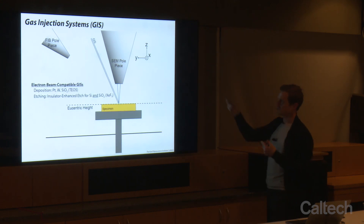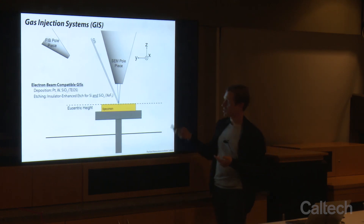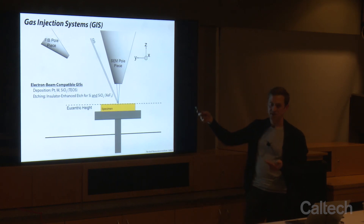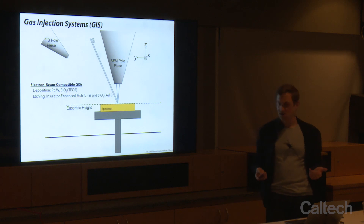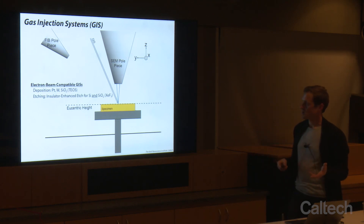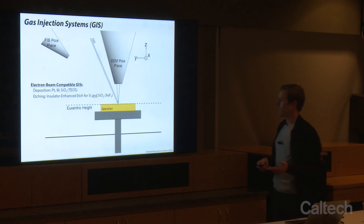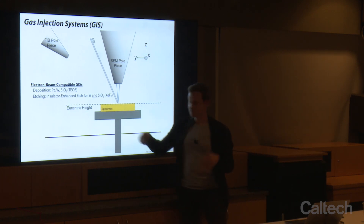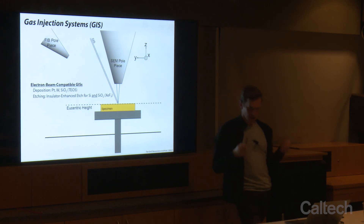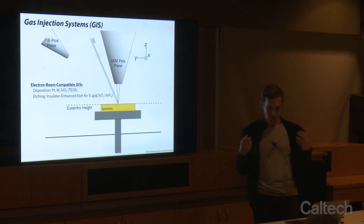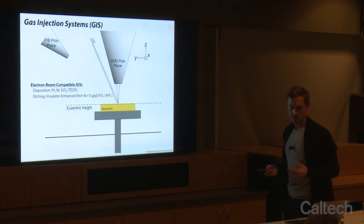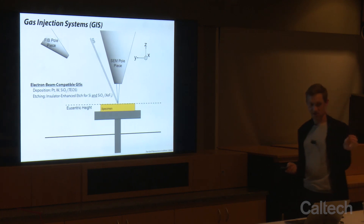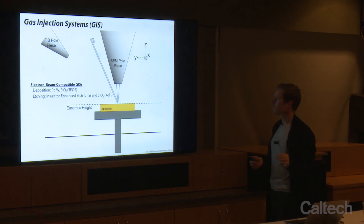We can also use these gas injection systems with the electron beam. Primarily we do this to deposit material — platinum, tungsten, and silicon oxide will all deposit the same way as with the gallium beam. We can also sometimes do etching: people have reported that with xenon difluoride gas and incident electrons adding energy, you can enhance the etch rate of your material just with the xenon difluoride and electrons.